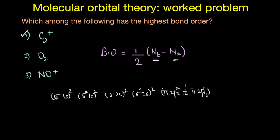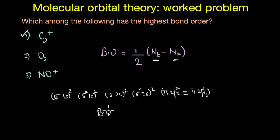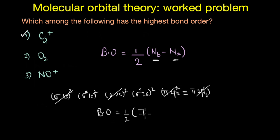We already know from the chapter on structure of atom how electronic configuration looks in terms of atomic orbitals. This is how it looks in terms of molecular orbitals. Applying the formula, the bond order equals half of: bonding orbital electrons (σ1s², σ2s², π2px², π2py¹ = 7) minus anti-bonding orbital electrons (4), which gives us a total of 1.5. So the bond order of C2+ is 1.5.